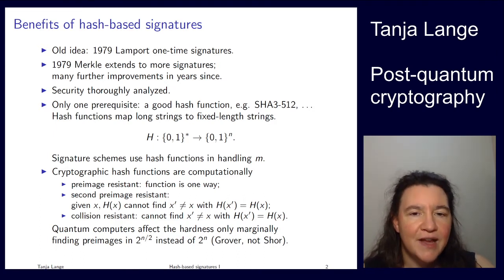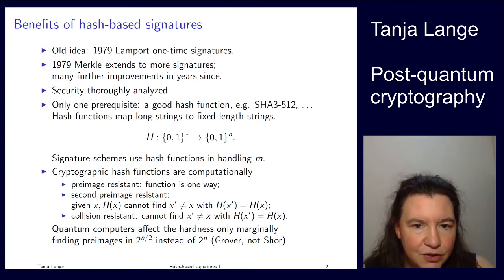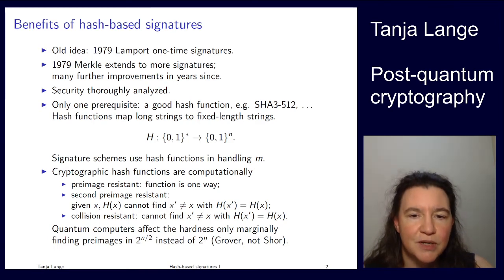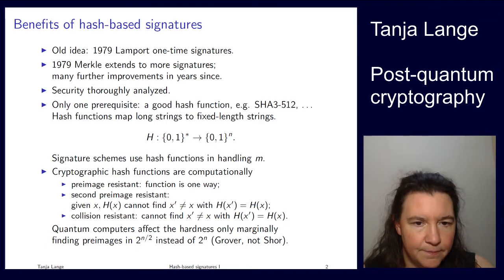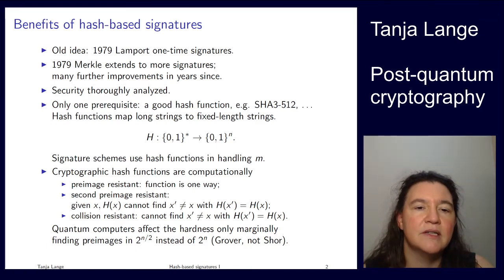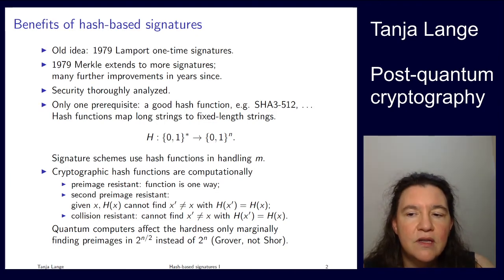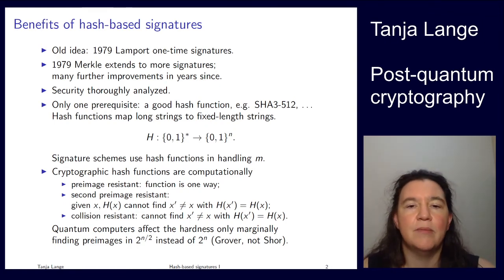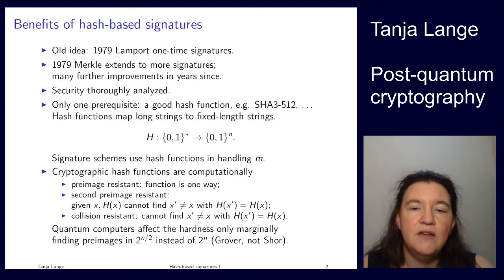Of course, if h were an injective function, a second pre-image wouldn't even exist. But since the pre-image set is much larger than the image set, many pre-images typically do exist — you just shouldn't be able to find them. Finally, the third requirement is collision resistance, which removes even more restrictions from the attacker: they can find any pair x and x' which are not equal but have the same output, and even that should be hard.